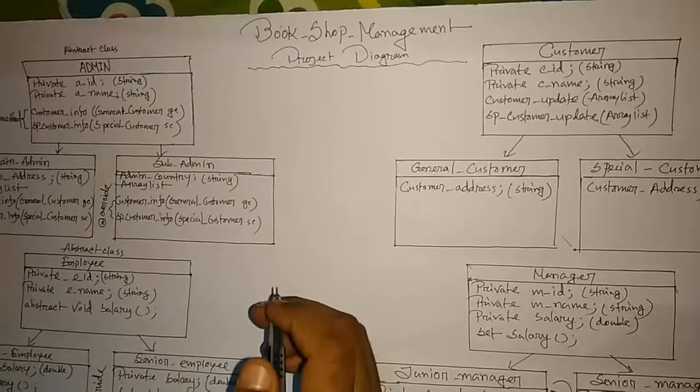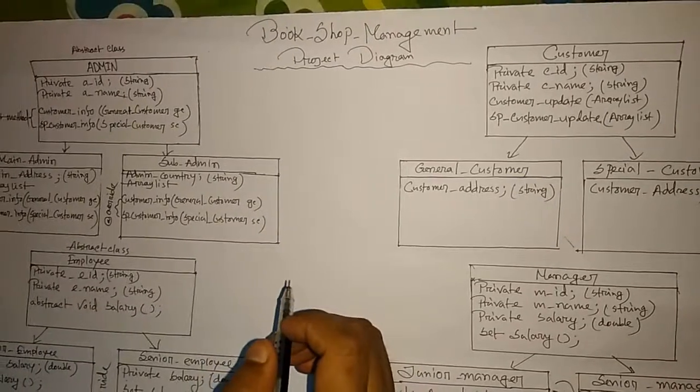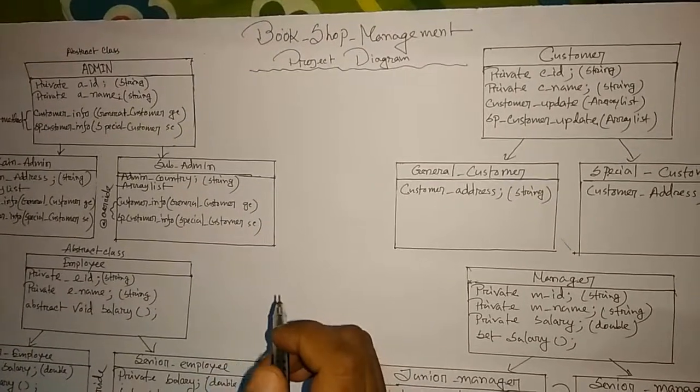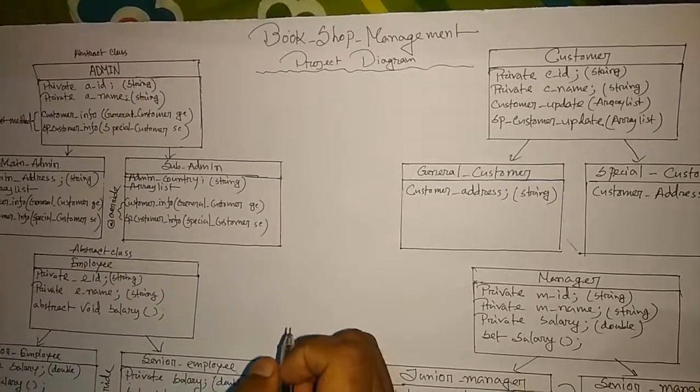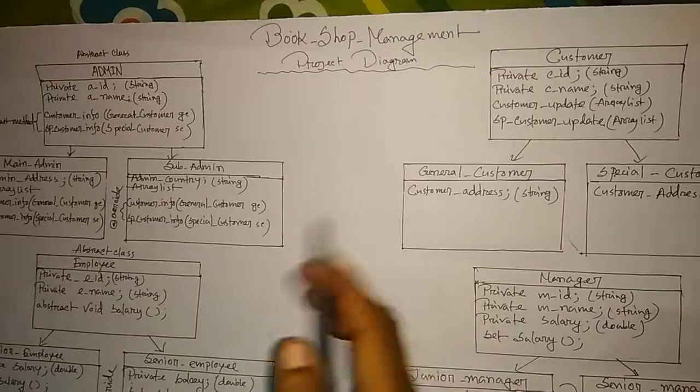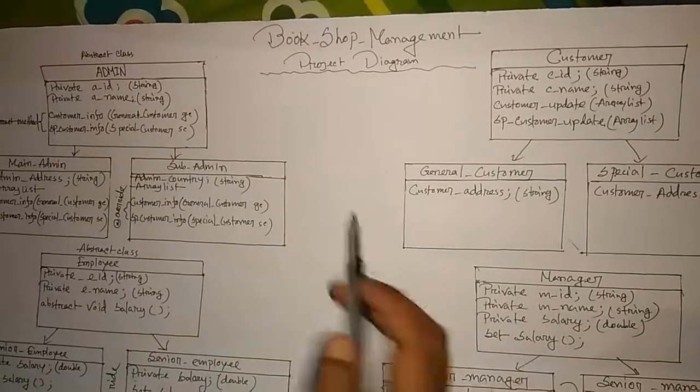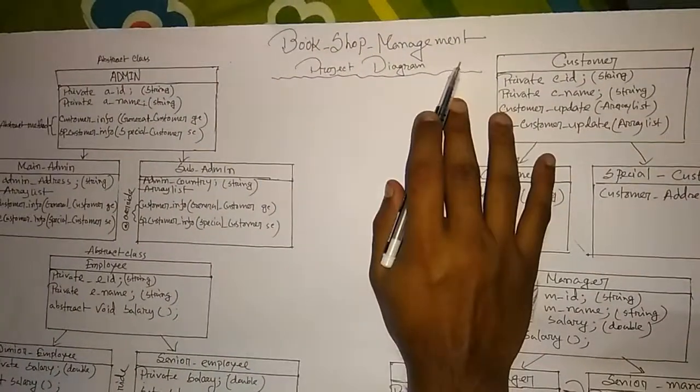My name is Rahanur Rahman. My ID is 171352079. My project name is Bookshop Management.